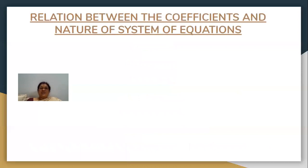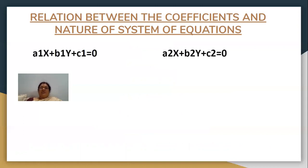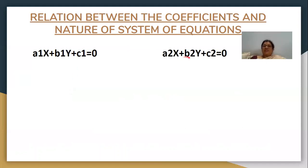Let us see what is the relation between the coefficients and the nature of the system of equations. Nature of the system means how the equations are — whether the equations are intersecting, parallel, or dependent. This all depends upon the coefficients of the pair of linear equations. When you take two equations: equation one is a1x plus b1y plus c1 equal to zero, and equation two is a2x plus b2y plus c2 equal to zero, there is a relation between the coefficients a1, b1, c1 and a2, b2, c2 and the nature of the lines.